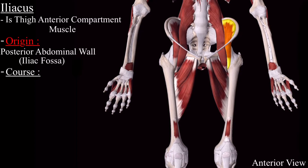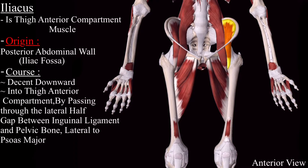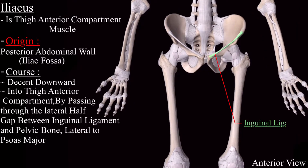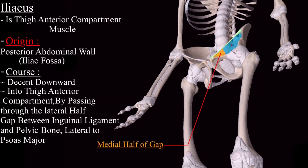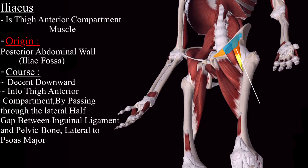After origination, the muscle descends downward into the interior compartment of the thigh by passing through the lateral half of the gap between the inguinal ligament and the pelvic bone, lateral to the psoas major muscle. This is the inguinal ligament and this is the pelvic bone. This is the gap between them — the medial half and the lateral half. The iliacus muscle passes through the lateral half of this gap, lateral to the psoas major muscle.